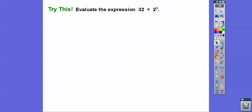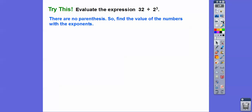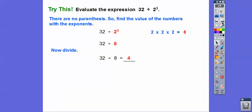Let's evaluate the expression 32 ÷ 2³. The order of operations: no parentheses, so let's find the value of the exponent. 2³ means 2 × 2 × 2: two times two is four, four times two is eight — so 2³ = 8. A common mistake is kids think 2³ is six because they multiply 2 × 3. Now we're left with 32 ÷ 8, and 32 divided by 8 is 4.